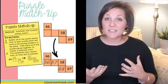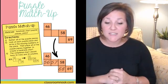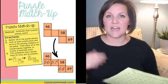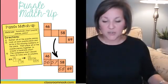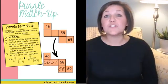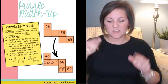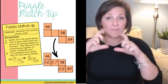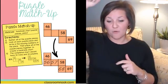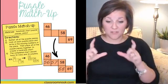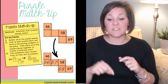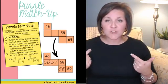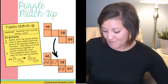Game number five is Puzzle Matchup, and this is really good for number sense. You have a blank hundreds chart — or create a table in PowerPoint — and fill in only certain numbers, then cut it into puzzle pieces. Students have to fill in the blank boxes with the correct number. For example, 46, 58, and 69 are filled in on the puzzle piece, and they have to fill in 56, 57, and 68. They have to visualize on the hundreds chart what numbers are missing. Those are your five games you can play with a hundreds chart.